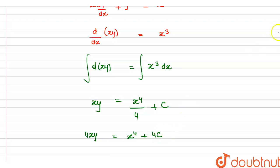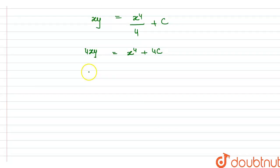Since 4C is also a constant, we can write this as 4xy = x⁴ + C. This is the solution to the differential equation.